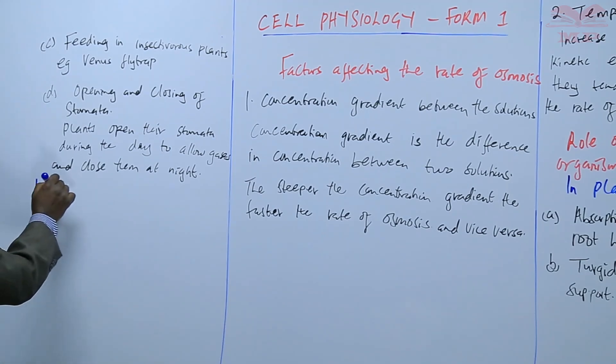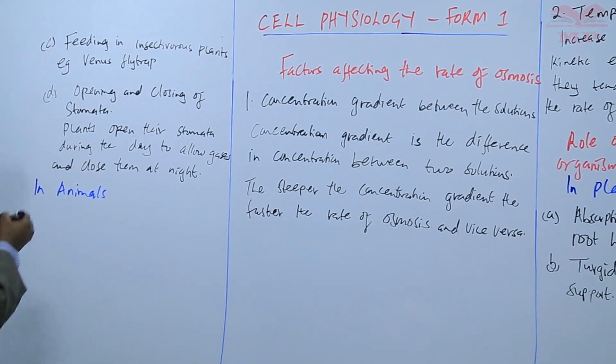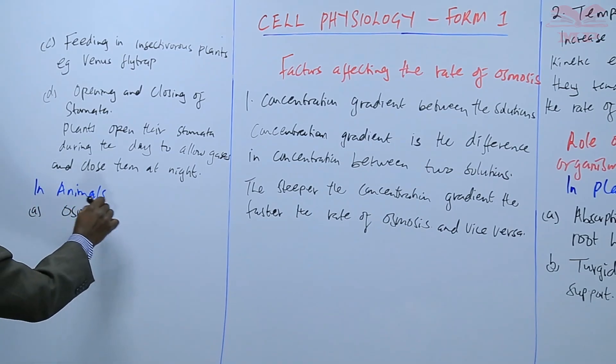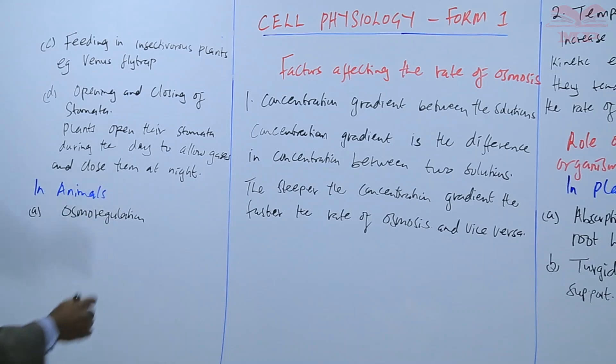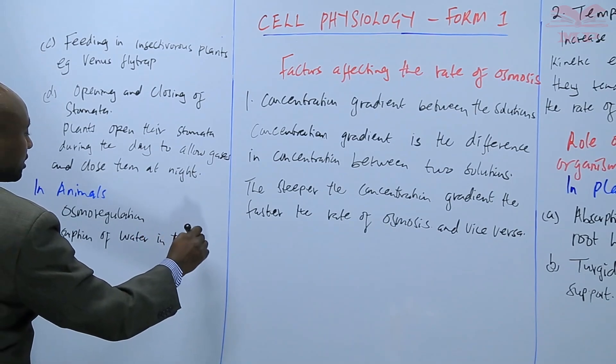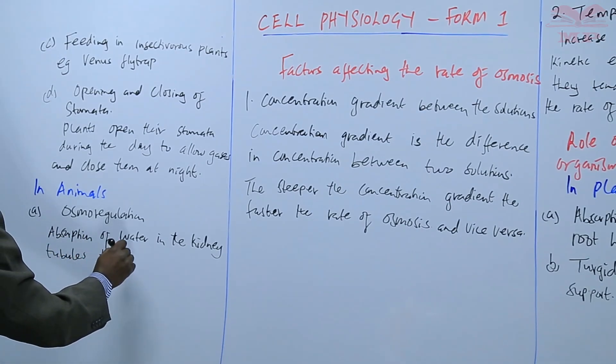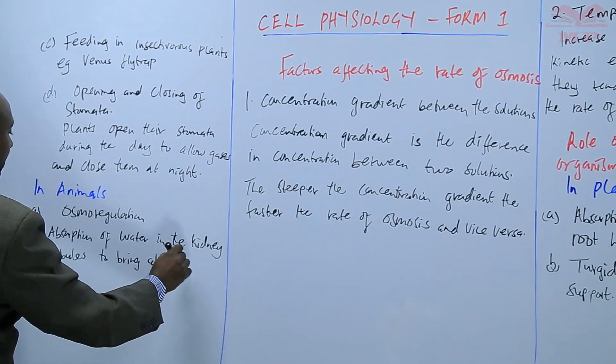Next, we look at animals. In animals, we have a process called osmoregulation. And this is the absorption of water in the kidney tubules to bring about water balance.